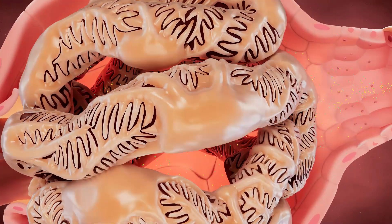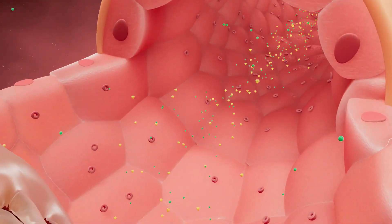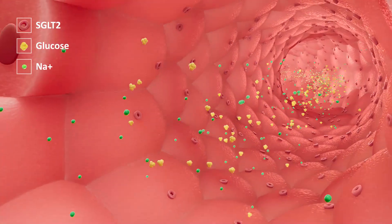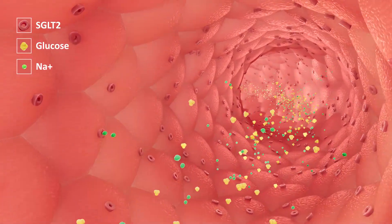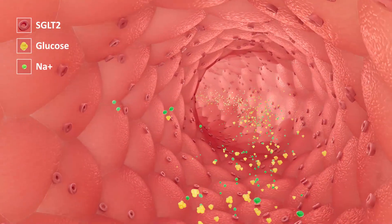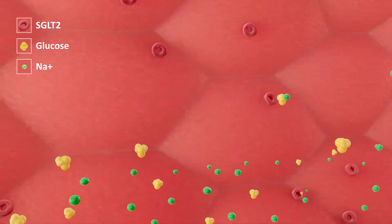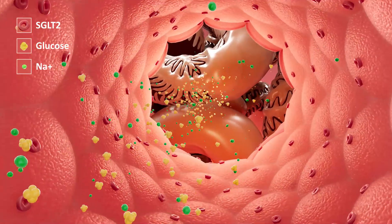Sodium Glucose Co-Transporter 2 or SGLT2 is expressed in the proximal convoluted tubule of the kidney and is responsible for almost all of sodium and glucose reabsorption into the blood in humans.